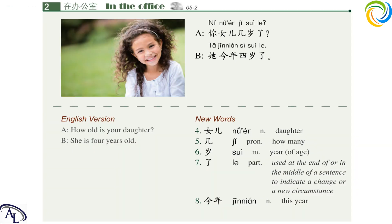课文 2 Text 2. 你女儿几岁了？她今年四岁了。New words: 女儿, 几, 岁, 了, 今年。